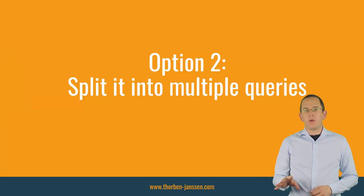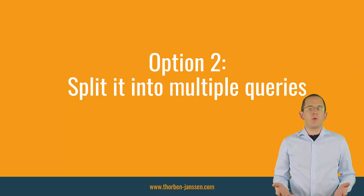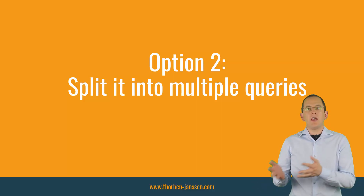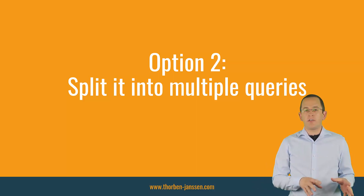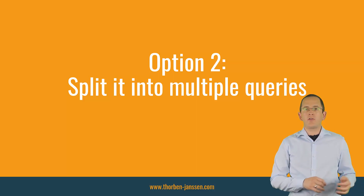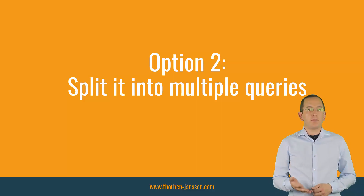Option 2: Split it into multiple queries. Fetching huge Cartesian products in one query is inefficient — it requires a lot of resources in your database and puts unnecessary load on your network. Hibernate and your JDBC driver also need to spend more resources to handle the query result. You can avoid that by performing multiple queries that fetch different parts of the required graph of entities.